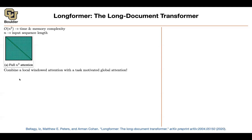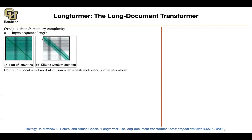We also know about convolutions, and we know that convolutions look at a short window around each word or each pixel. Can we do a similar thing here? Can we combine a local windowed attention with a task-motivated global attention? Let's borrow ideas from CNNs with local windowed attention. Rather than each query paying attention to every key in the input, it could focus around a neighborhood — this is very similar to what convolution does.